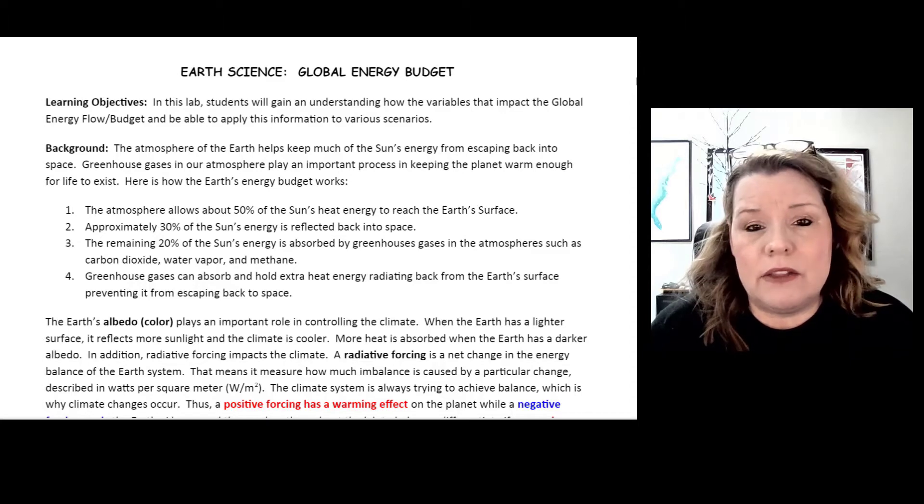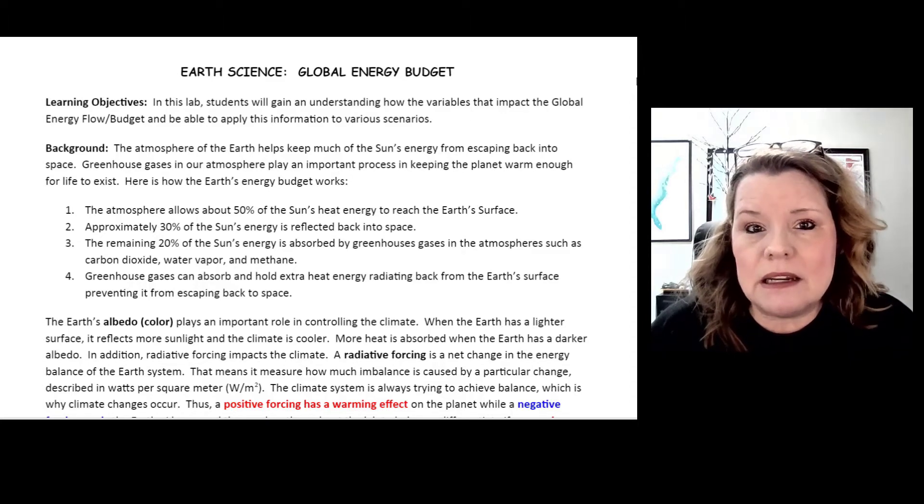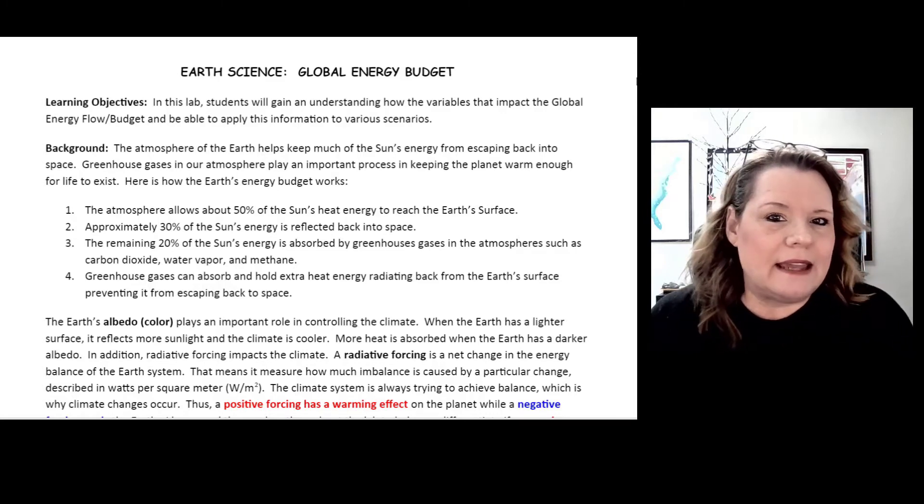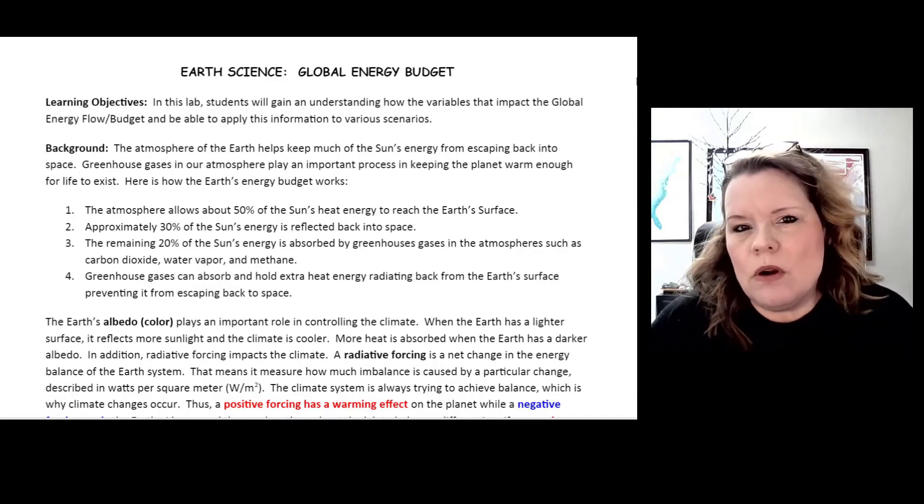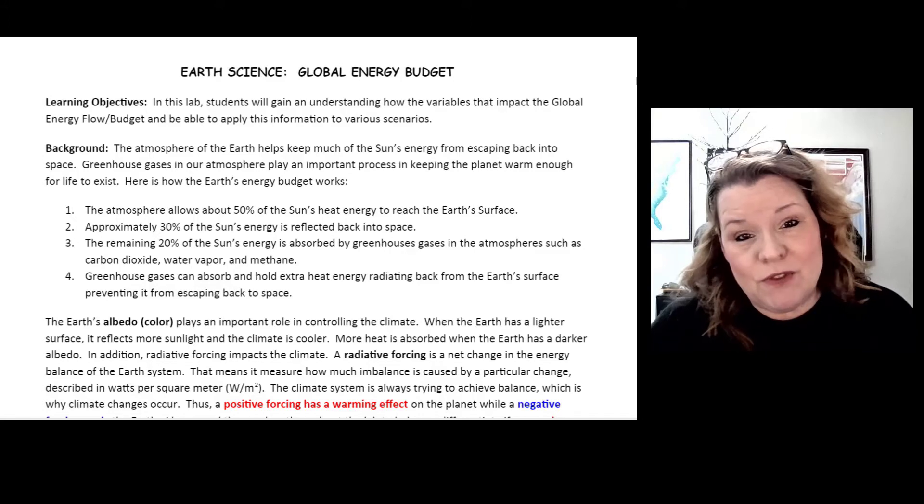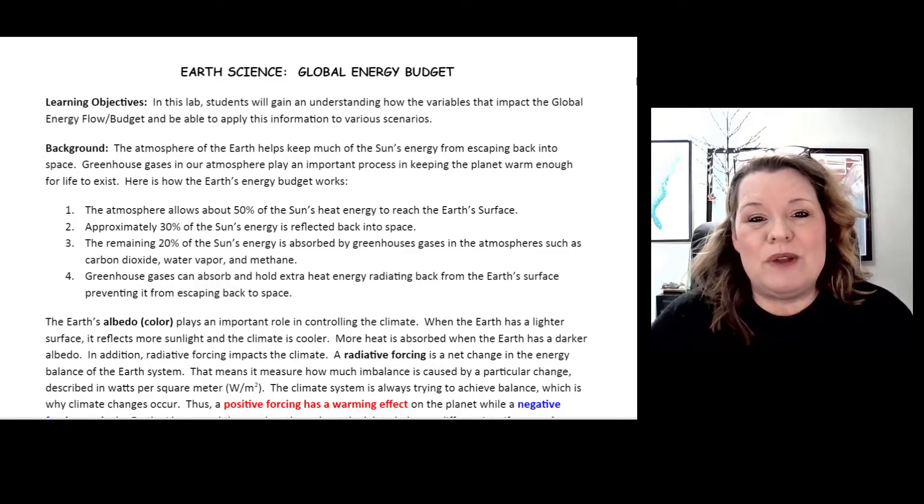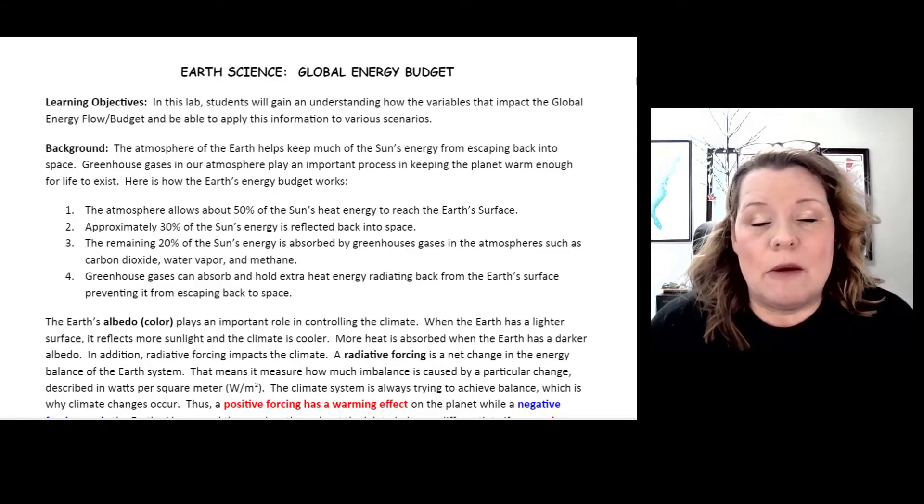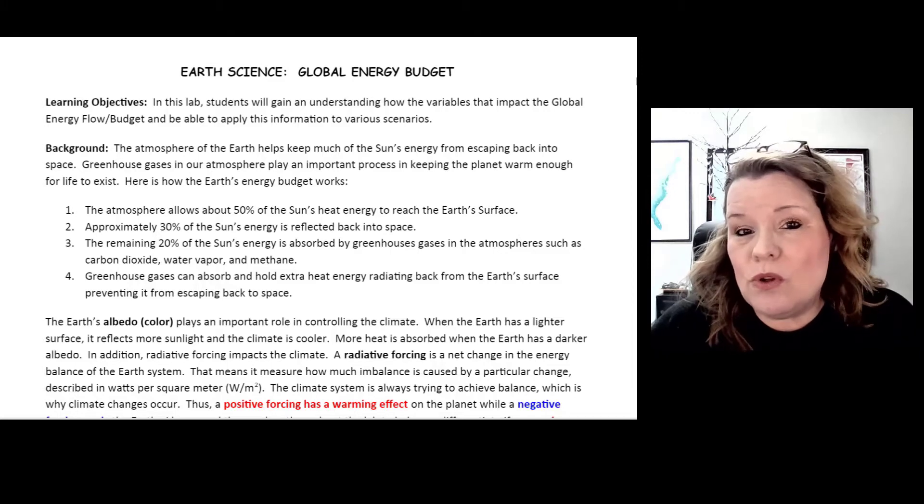When we have land surfaces that are very light in color, meaning they're white, or maybe even a light sandy color, more light and energy can be reflected back to space. So we would have an albedo that would cause a cooler climate.